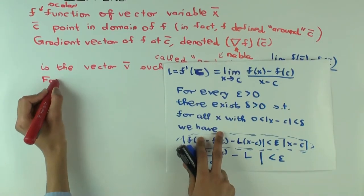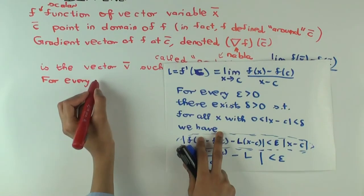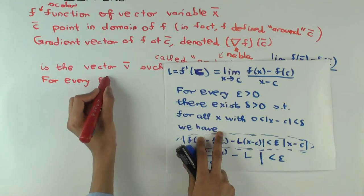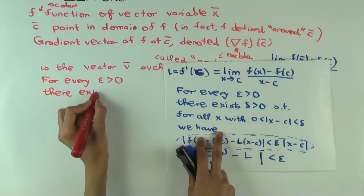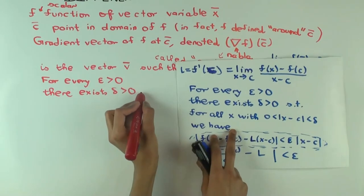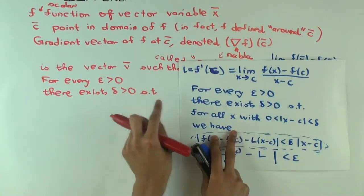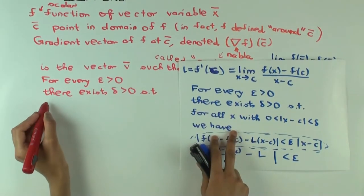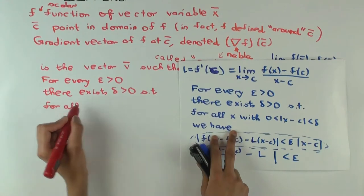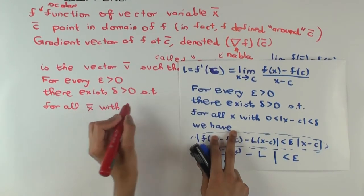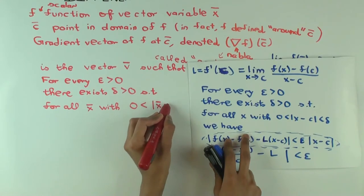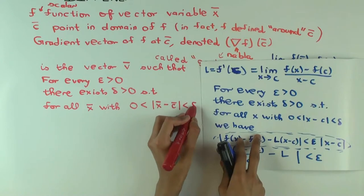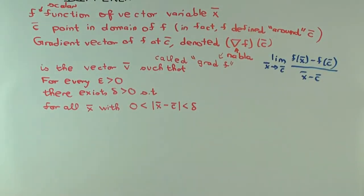So, for every epsilon greater than zero, there exists delta greater than zero, such that, or by the way, this st is such that. Such that, for all x with, zero less than. What does this mean? In the vector version.